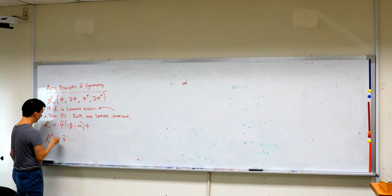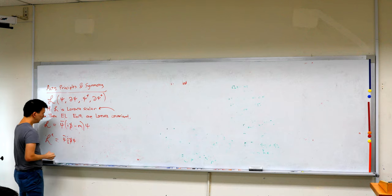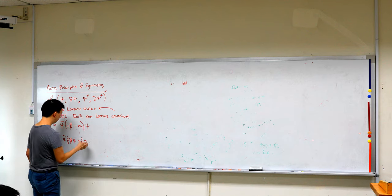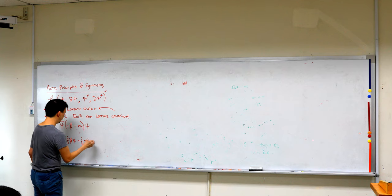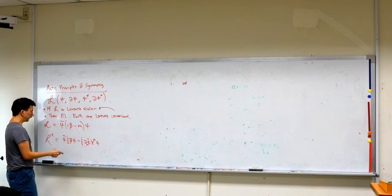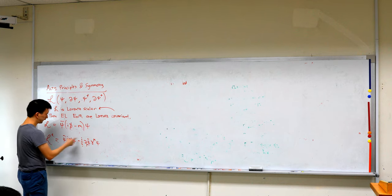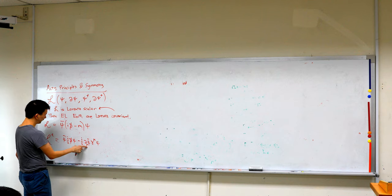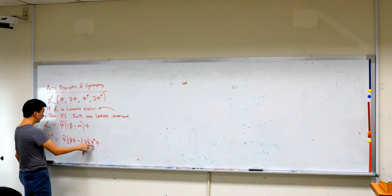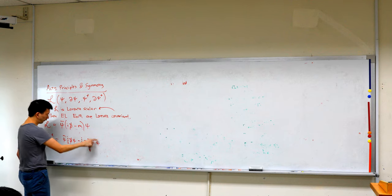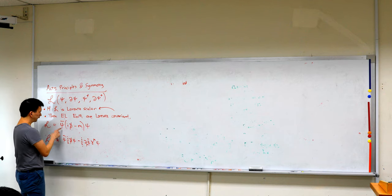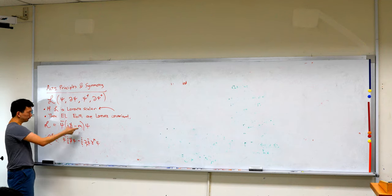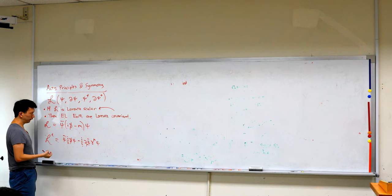The Hermitian form is L-prime = psi-bar (i/2) partial-slash psi, plus (i/2) partial_mu of psi-bar, gamma^mu, psi. If you integrate by parts the second term — remembering the Lagrangian appears inside an integral — it acts on psi, and these two terms combine to give you the first form L. The first form L is not Hermitian, but it's not Hermitian only up to a total derivative, which doesn't affect the equations of motion.